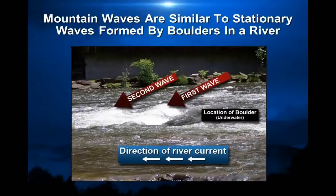A similar process is going on in the atmosphere when you have a stable air mass over the mountains. When I say a stable air mass, air wants to either remain at the same altitude or it wants to sink. So air is going to behave similar to water because water always wants to flow downhill. Whenever you have a wind flow that's perpendicular to the mountains and it's forced to rise over them, if you have a stable air mass, it will form waves downwind of the mountains.